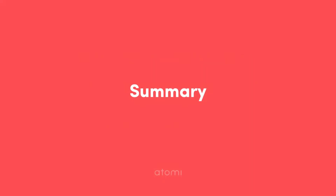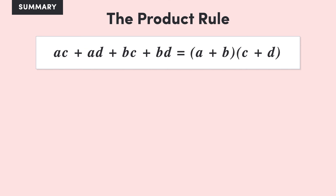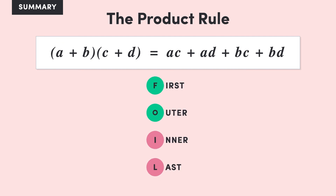That brings us to the end of this video. Let's recap what we covered. First, we saw that the product rule is used to expand expressions in the form (a + b)(c + d) to ac + ad + bc + bd. We can also reverse the product rule to express ac + ad + bc + bd in factorised form. We use the acronym FOIL to help us remember that we first multiply the outer term of the first bracket by the terms in the second bracket, before multiplying the inner term of the first bracket by the same terms. Finally, we ran through examples where we saw that we can apply the FOIL method to expressions containing more terms in one of the brackets. That's the end of this lesson.